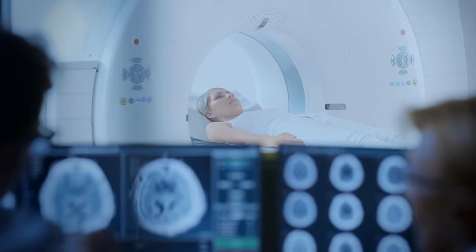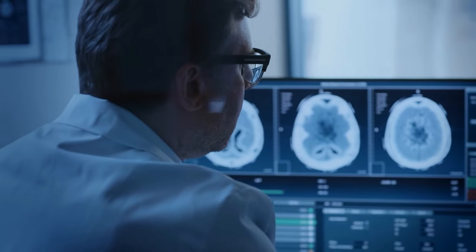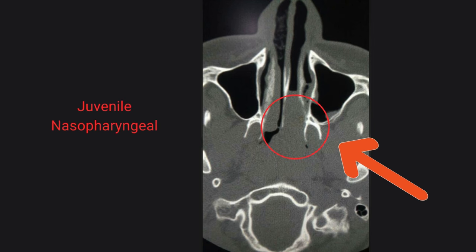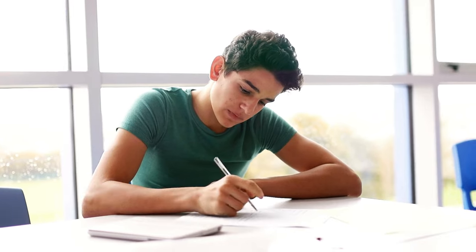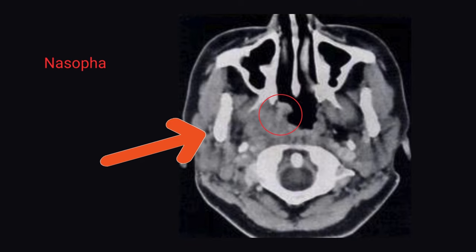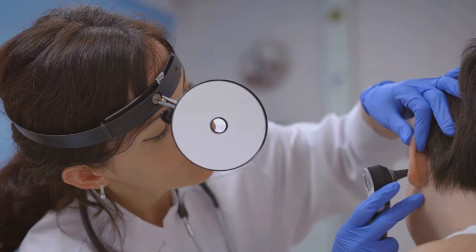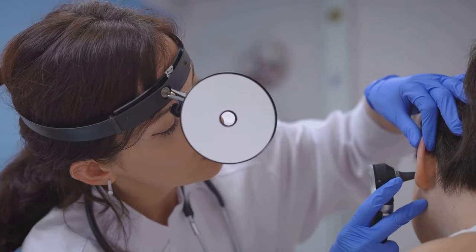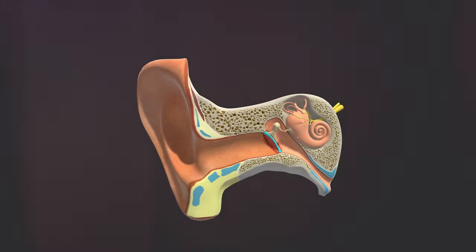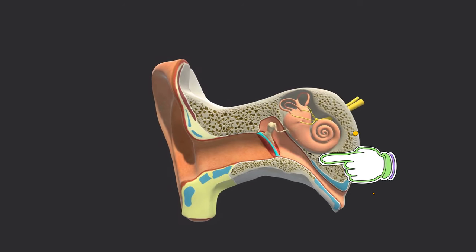Certain tumors of the nasopharynx can also cause serous otitis media. One of them is juvenile nasopharyngeal angiofibroma, a benign tumor that commonly affects adolescent males and can present with symptoms such as nasal obstruction and serous otitis media due to its proximity to the eustachian tube. Additionally, malignant tumors like nasopharyngeal carcinoma might also contribute to the development of serous otitis media. While serous otitis media is a condition that can be managed, its association with nasopharyngeal tumors underscores the importance of comprehensive evaluation and treatment of underlying causes. All these conditions prevent the normal drainage of fluid from the middle ear, and it's this fluid buildup that defines serous otitis media.